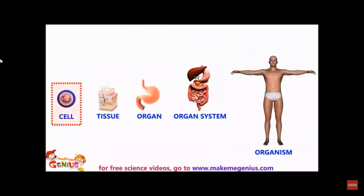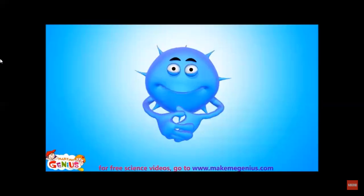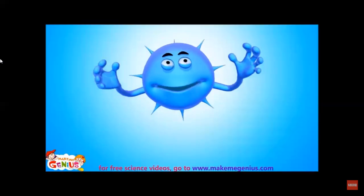Many of us join together to form a tissue. Then tissues join together to make an organ. After that, organs join together to form an organ system, and all organ systems combine together to form a body. So now you know that we are very important.